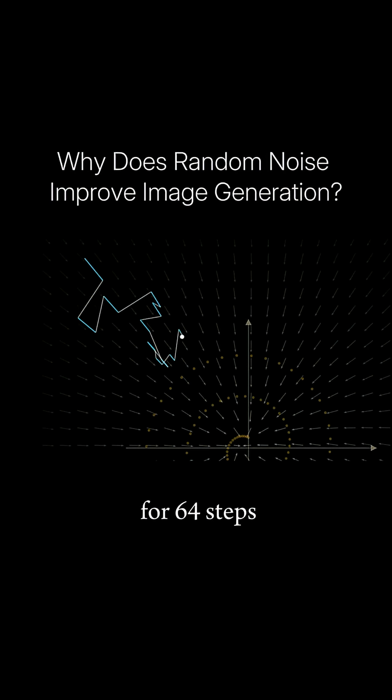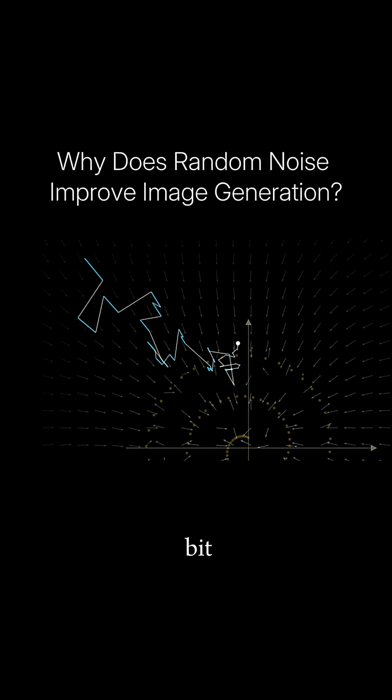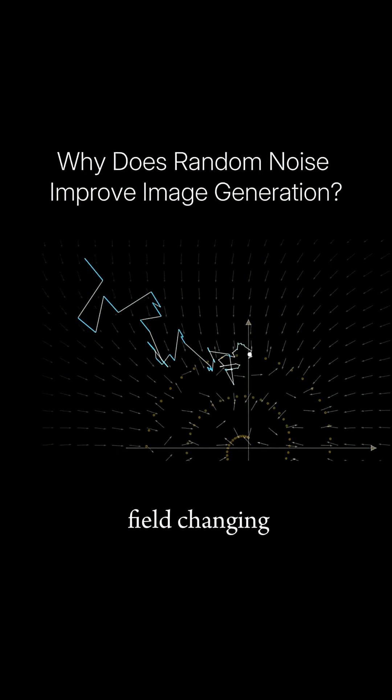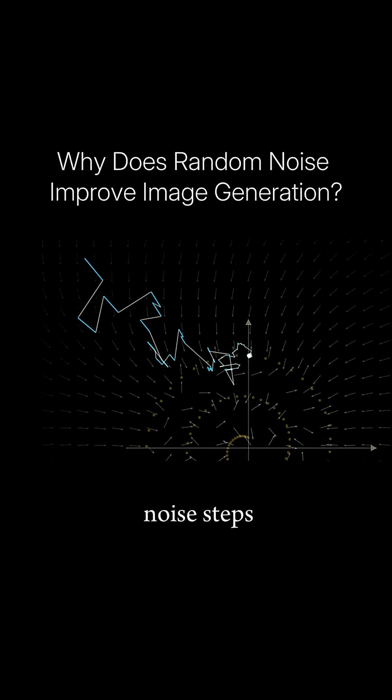Repeating this process for 64 steps, our particle jumps around quite a bit due to both our learned vector field changing and our random noise steps, but ultimately lands nicely on our spiral.